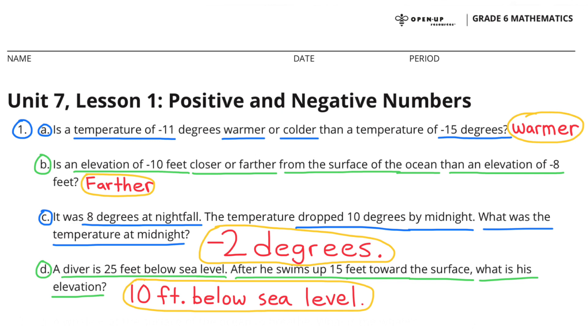B. Is an elevation of negative 10 feet closer or farther from the surface of the ocean than an elevation of negative 8 feet? Negative 10 feet is farther from the surface of the ocean than negative 8 feet.